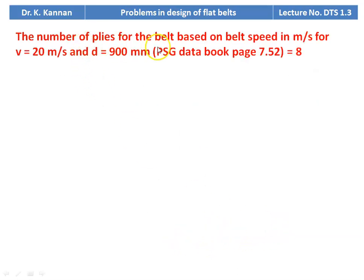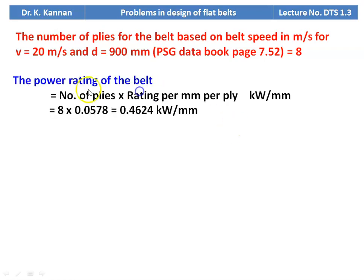Number of plies: for V = 20 m/s and smaller diameter = 900 mm, from PSG data book we take 8 plies, since it is a heavy duty application at high speed. Power rating of the belt = number of plies × rating per mm per ply = 8 × 0.0578 = 0.4624 kilowatt per millimeter.